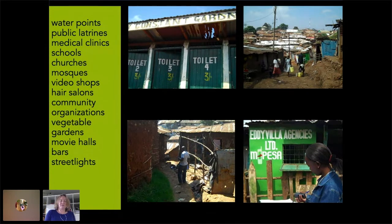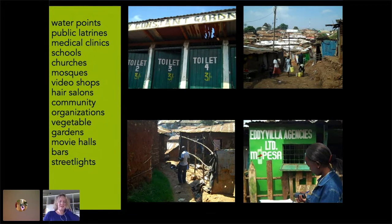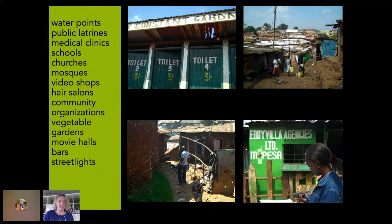Informal settlements in general are naturally difficult to get any data about, but there's always somebody wanting to get data about them. Kibera is extremely well researched, but as someone mentioned in an earlier keynote, there's a lot of extractive kind of data — researchers coming in, taking intensive data, and then not coming back to present any results or data back to the community.